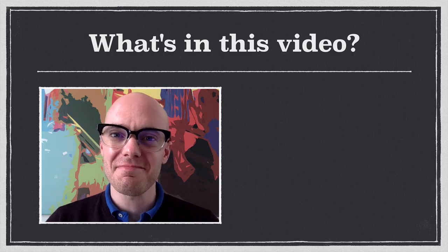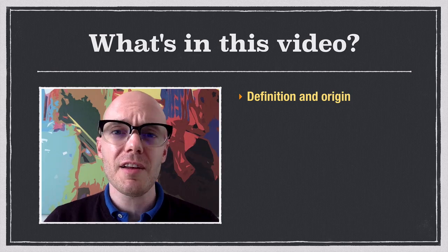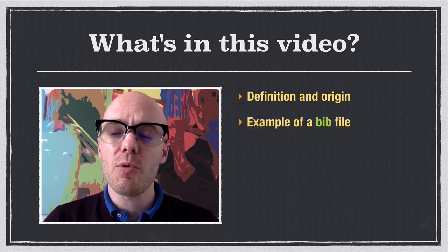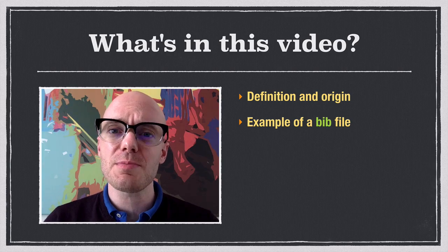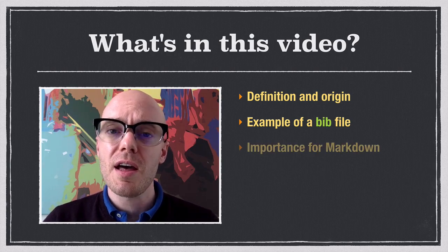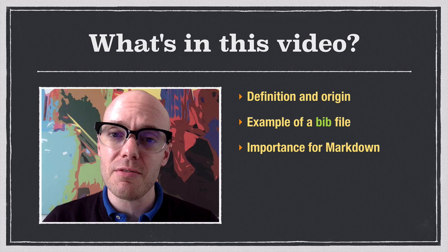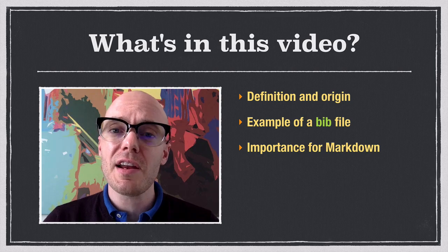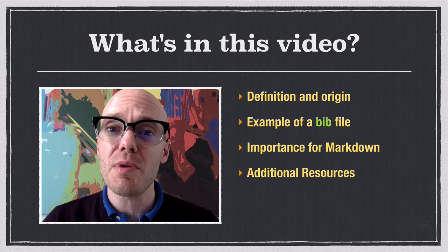Hi, everyone. Here's what we're going to look at in this video. First, I'm going to give you a definition of a bib file and then talk a little bit about its origins. Then I will give you an example of a bib file so you can have a grasp of how they work internally. Then we'll talk about why all of this is important for Markdown. And finally, I'm going to end with some additional resources that you can use to get started putting together your own bib file.